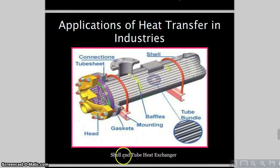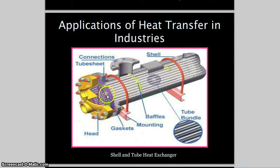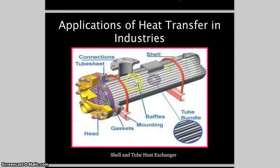Here's an example of a shell and tube heat exchanger, mostly used in food technology. A cold fluid enters at one end, and hot fluid flows through baffles inside the shell. As we said, heat transfers from hot to cold. For example, if you want to heat up milk, you pass it alongside hot water so the milk heats up before it's spray-dried to produce powdered milk.